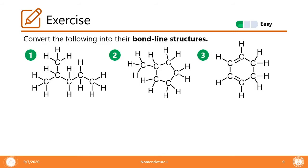Let's do some easy exercises — converting the following into their bond line structures. For the first one, we have a chain of five carbons. We draw one, two, three, four, five — a five-carbon chain. At the second carbon, we connect another carbon, drawing a line going up, with that endpoint being another carbon. Let's confirm that's the correct structure.